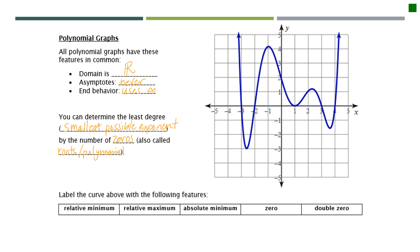So all of these numbers — at negative 3, negative 2, positive 1, positive 3, positive 4 — all of these places where I just put a yellow dot are all zeros or solutions or roots of this polynomial. A zero is any x-intercept, so anywhere that the graph crosses or touches the x-axis.